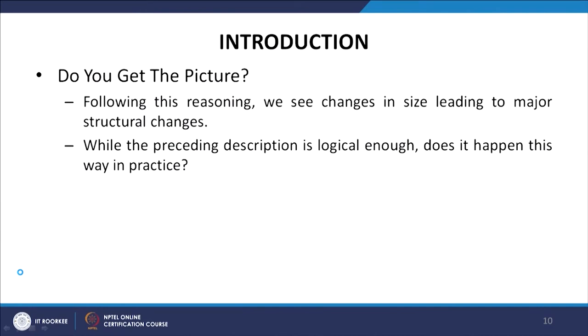This increase in formalization may also be accompanied by still greater vertical differentiation as management creates new units to coordinate the expanding and diverse activities of organizational members. With top management further removed from the operating level, it becomes difficult for senior executives to make rapid and informed decisions. The solution is to substitute decentralized decision making for centralization. Following this reasoning, we see changes in size leading to major structural changes.